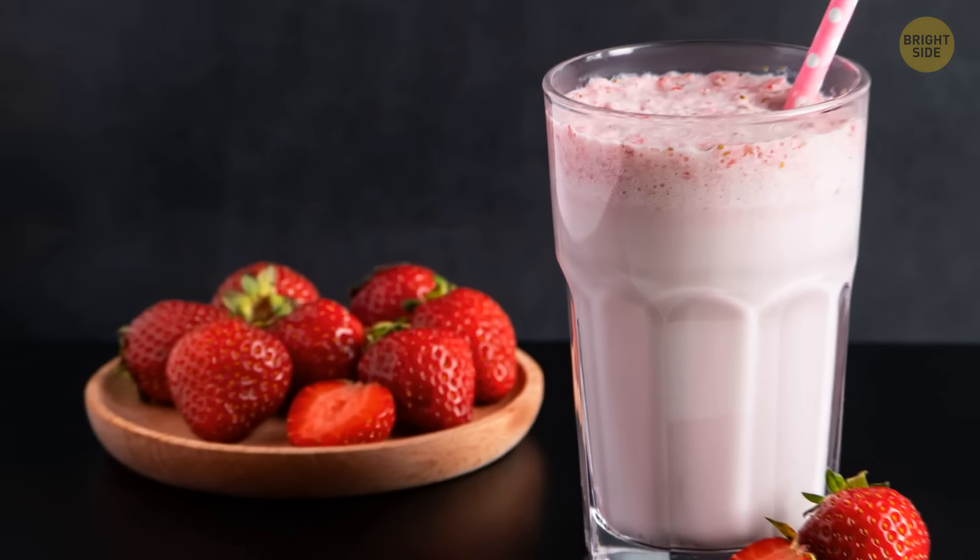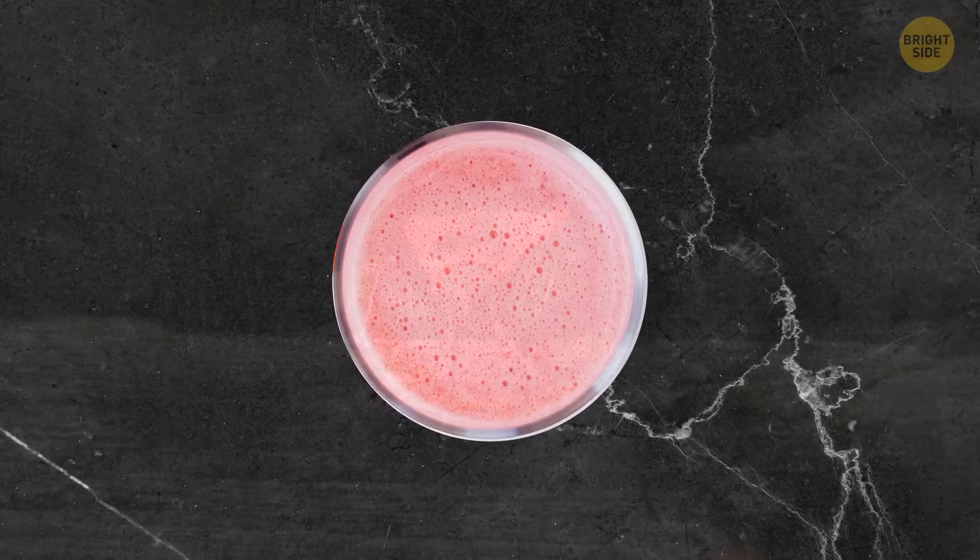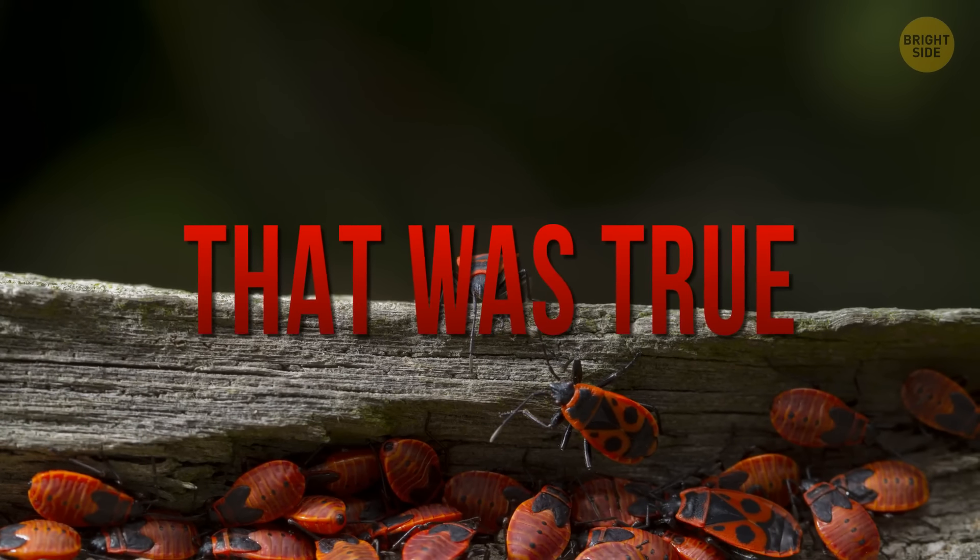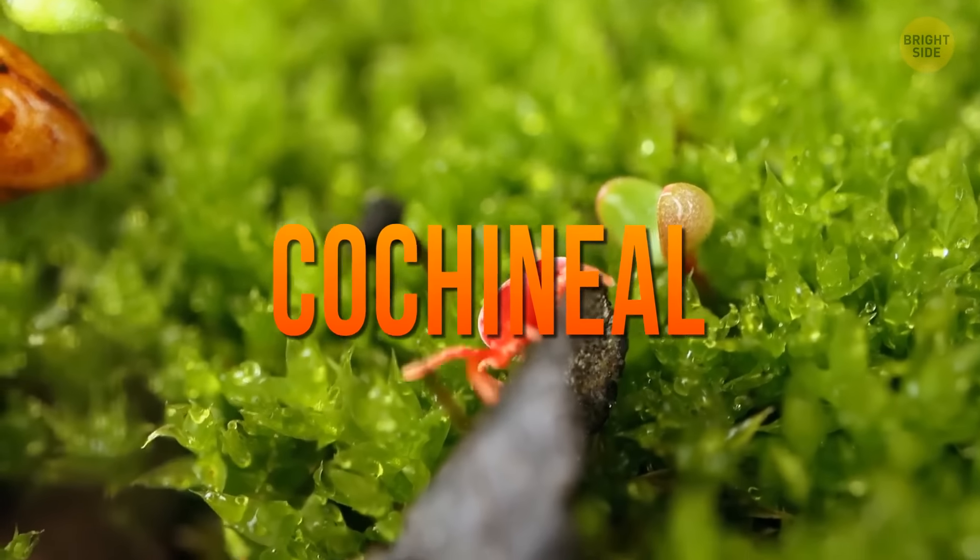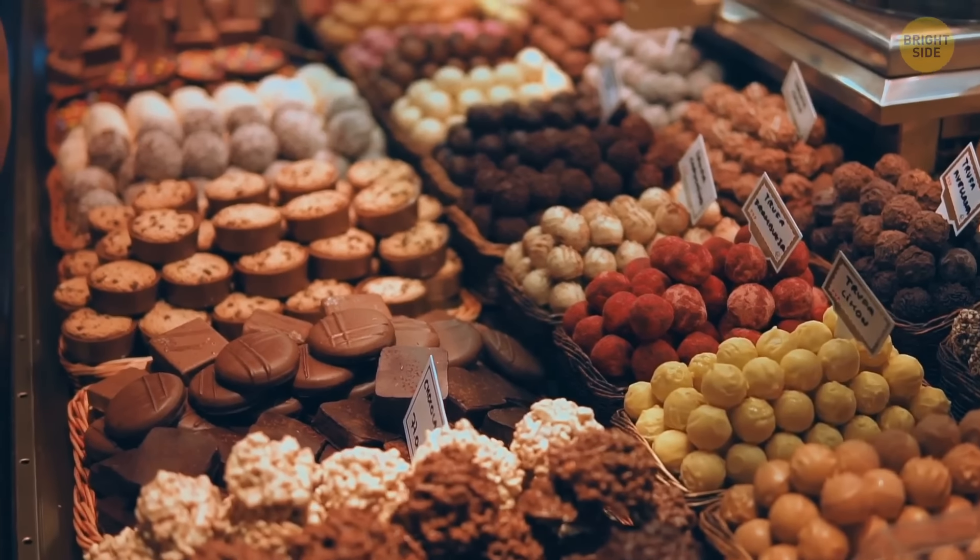You might have heard that the pink hue your strawberry frappuccino has to it is achieved thanks to crushed bugs. And that was true until 2012. Little critters called cochineal bugs were ground up to make red dye. This method is still used by many companies, but you won't find the bugs in your coffee anymore.